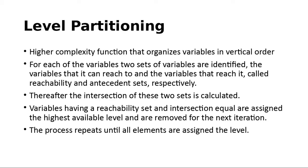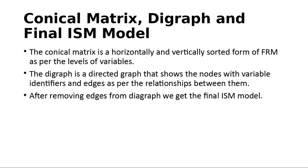The process repeats until all elements are assigned levels. Then the conical matrix is produced, which is a horizontally and vertically sorted form of the final reachability matrix. This helps in making the digraph, and the finalized model attempts to remove as many edges as possible from the diagram without affecting the reachability levels of the variables.